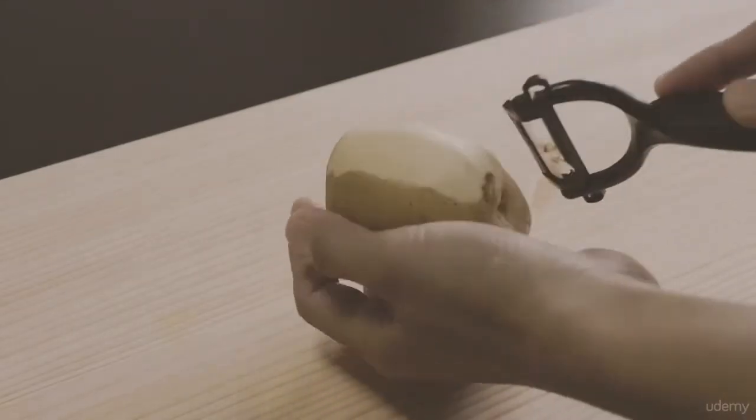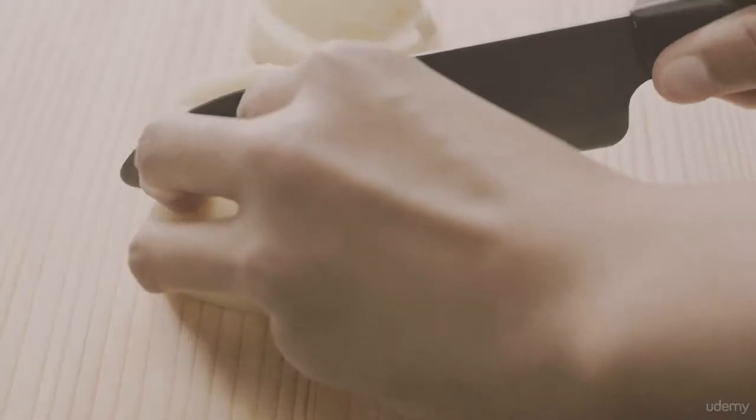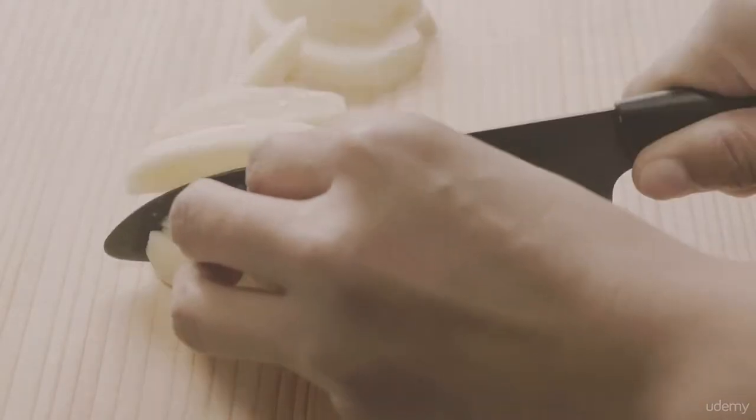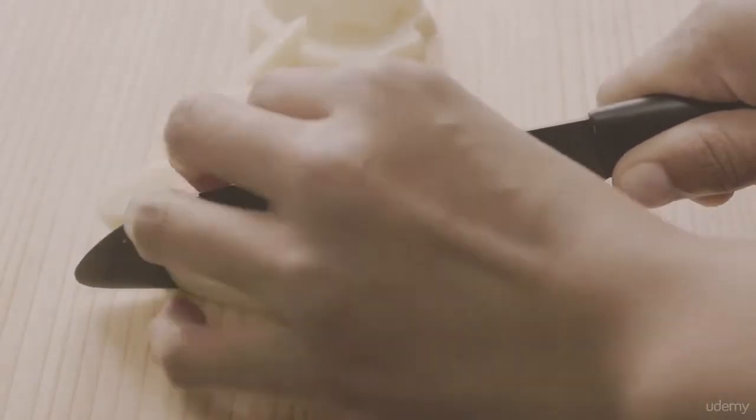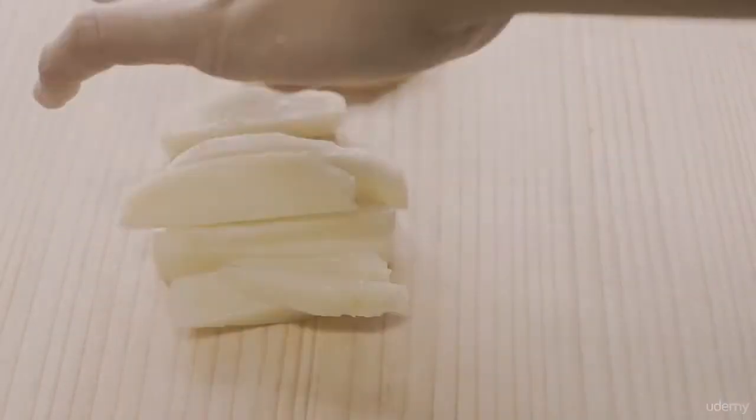Peel the potatoes then cut them into 1cm cubes. Soak the potatoes in water and drain before using.